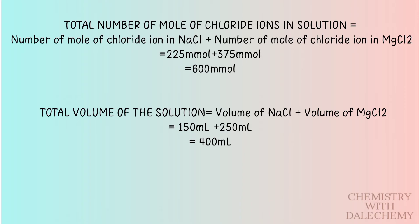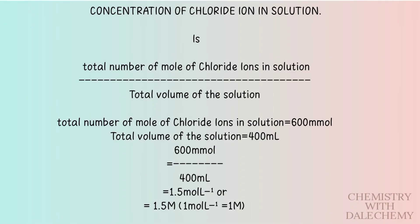The concentration of chloride ion is now 600 mmol divided by 400 mL, which is 1.5 moles per liter, or 1.5 molar, because 1 mole per liter equals 1 molar.